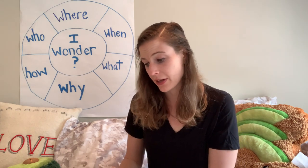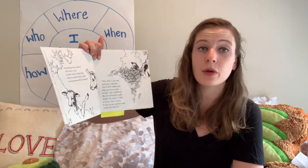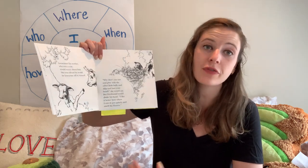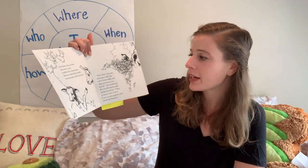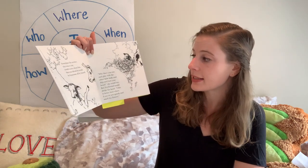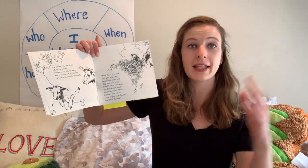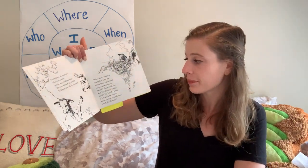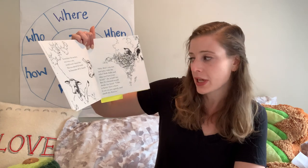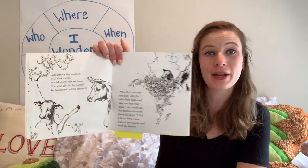Sometimes his mother, who is a cow — a female cow — would worry about him. She was afraid he would be lonesome all by himself. If you're feeling lonesome, you might be feeling lonely or alone. "Why don't you run and play with the other little bulls and skip and butt your head?" she would say. When bulls butt their head, that means they're hitting each other with their horns. But Ferdinand would shake his head: "I like it better here where I can just sit quietly and smell the flowers."